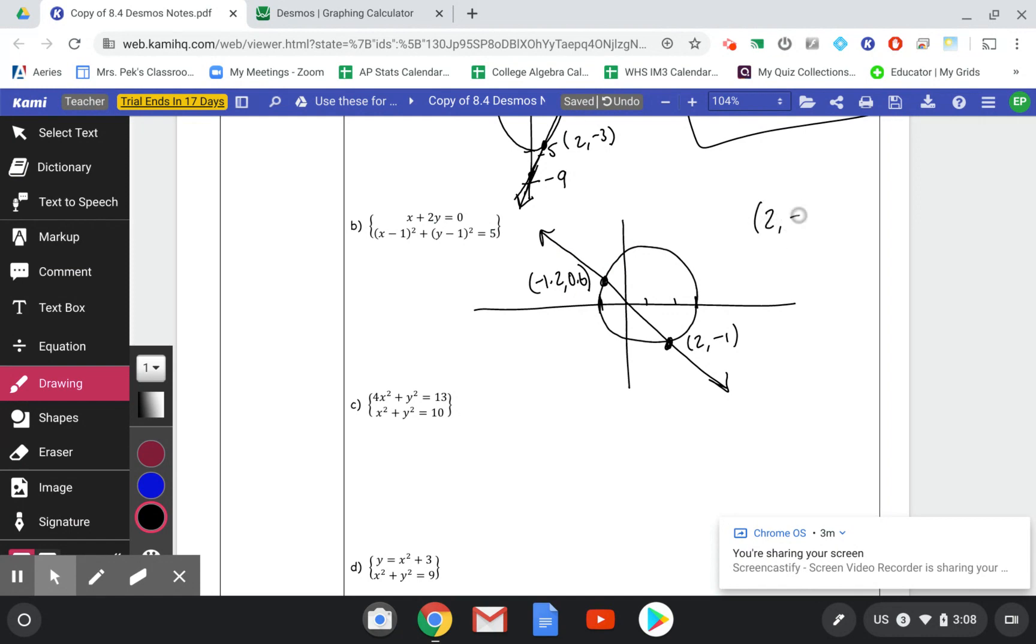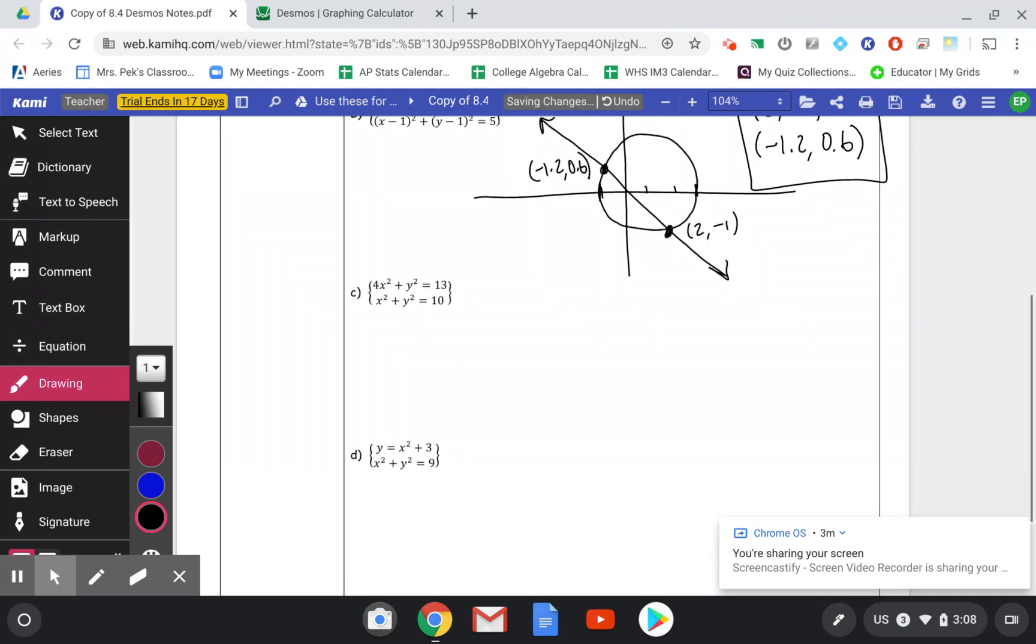And then just repeat your points, negative 1.2 and 0.6, and box them up. All right, two more examples. Nothing new, just some more examples to look at.